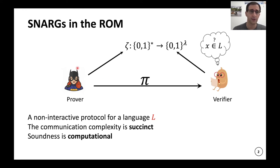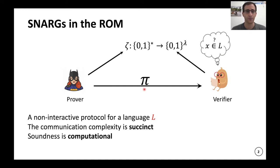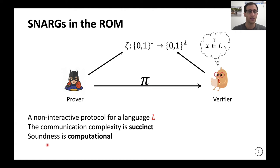SNARGs are succinct non-interactive arguments. This is a proof system for some language L where a verifier wants to be convinced that X is in the language. It's a non-interactive protocol, so the prover sends a single message pi. The communication complexity — meaning the size of this proof — is going to be succinct, so very small. In particular, for an NP language, this is much smaller than the witness itself, and the soundness is computational. This is in the random oracle model.